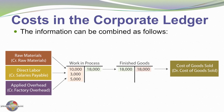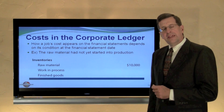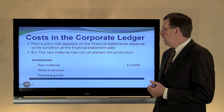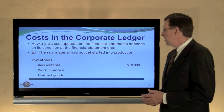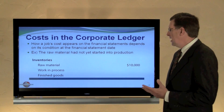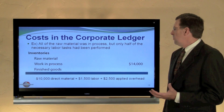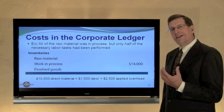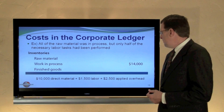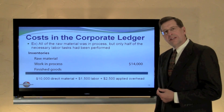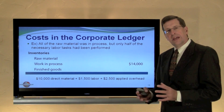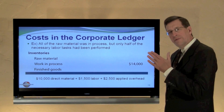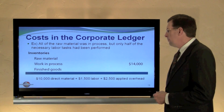It's a fairly logical process — the same way goods physically move between raw materials, work in process, finished goods, and cost of goods sold, so do the costs within the general ledger. If our accounting period ended and we had not yet put raw materials into production, we'd show inventory of $10,000 on our balance sheet. If the material was in process but only half the labor had been performed, we'd have $10,000 of direct materials, $1,500 of labor, and $2,500 of applied overhead — totaling $14,000 in work in process.